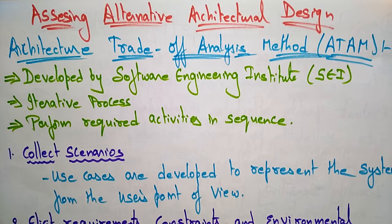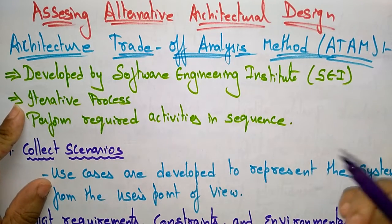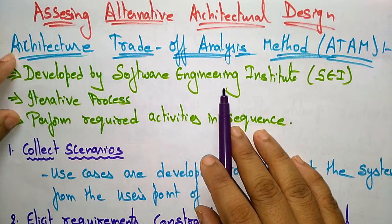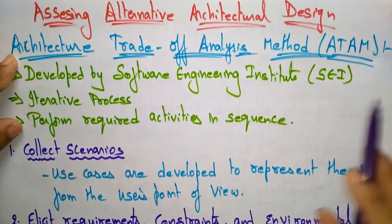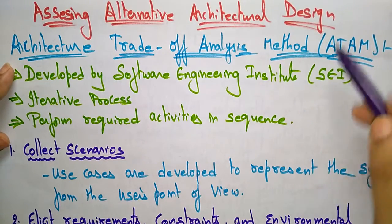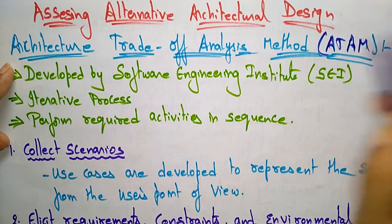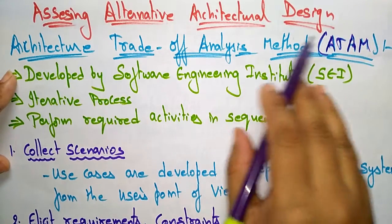You assess the different alternatives by asking questions regarding data and control. Finally, the preliminary idea of assessing the alternative architecture design is regarding the quality of the design. Now, let us see the different methods for assessing alternative architecture. One of the methods we will use is the Architecture Trade-off Analysis Method, the ATAM method.